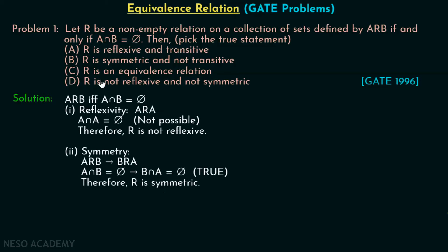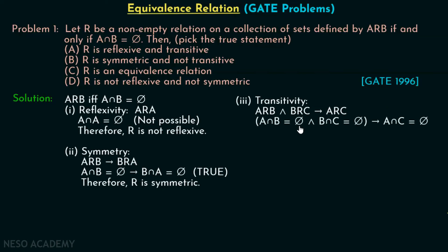Option B looks correct, but we also need to verify that R is not transitive. For transitivity, A related to B and B related to C should imply A related to C. This means: A intersection B equal to empty set and B intersection C equal to empty set should imply A intersection C equal to empty set. Let me tell you this need not always be true — let's see why with an example.